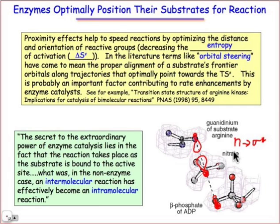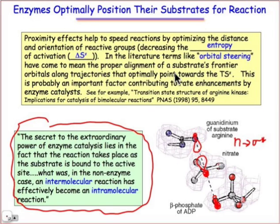Both the effects of proximity and orientation can be summarized as follows: the secret to the power of enzyme catalysis is that what was once an intermolecular reaction is now effectively, by the enzyme-substrate complex, an intramolecular reaction that benefits from these effects of proximity and orientation.